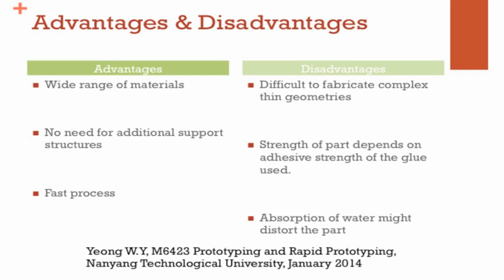For the disadvantages of LOM: it is difficult to fabricate thin or complex thin geometries because the cross-section is very small, making adhesive application difficult and cutting very thin strips of material challenging. The strength of the part depends on the adhesive strength of the glue, especially in the Z-axis, since it is the glue that bonds the part together. Lastly, if normal printing paper is used, water absorption may warp or distort the part.